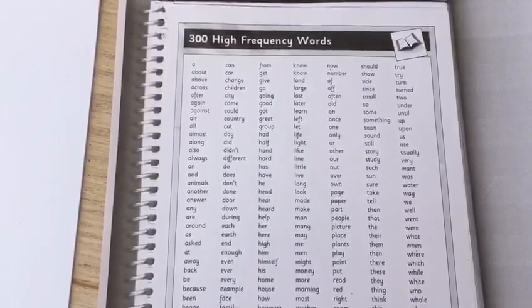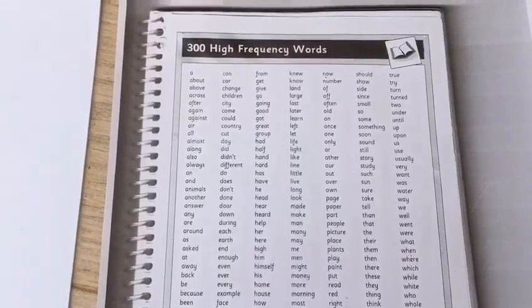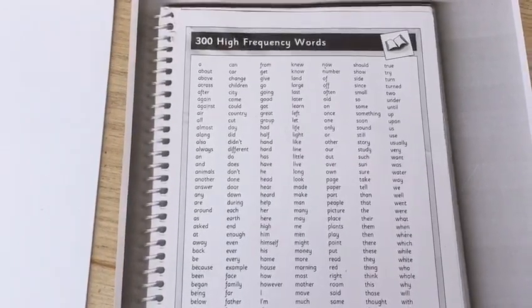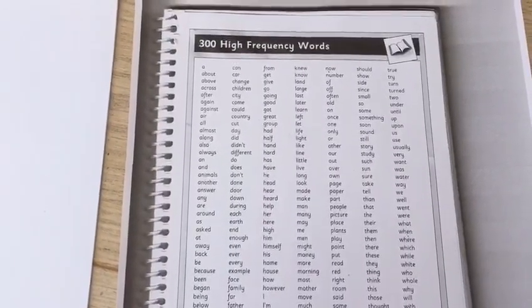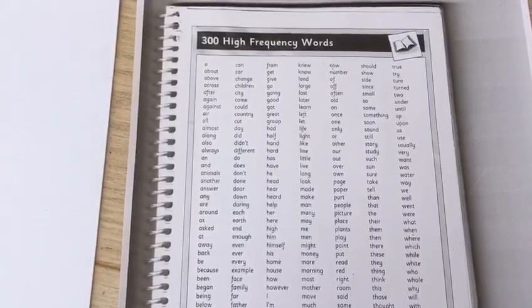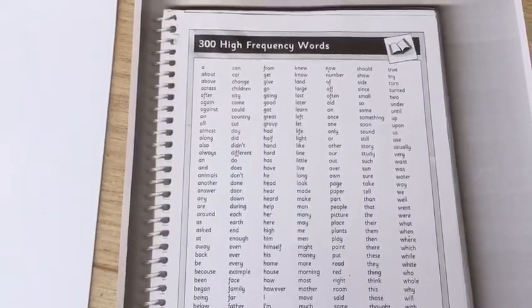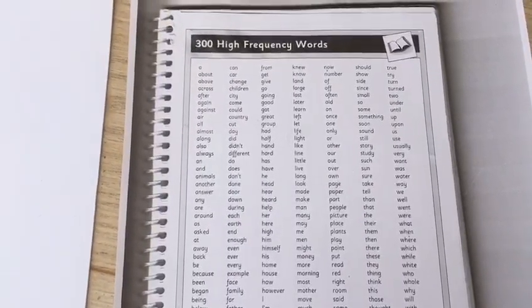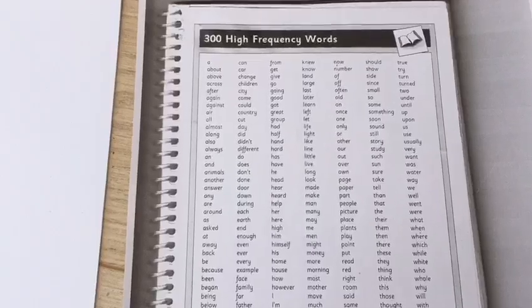The only way to do that is to ask somebody to test you on these words. Now don't do all 300 at once. The children who I work with at school know that we do little tests every now and then and we just find three words that they are not sure how to spell and then we stop there. So we don't keep going and keep testing all the words.